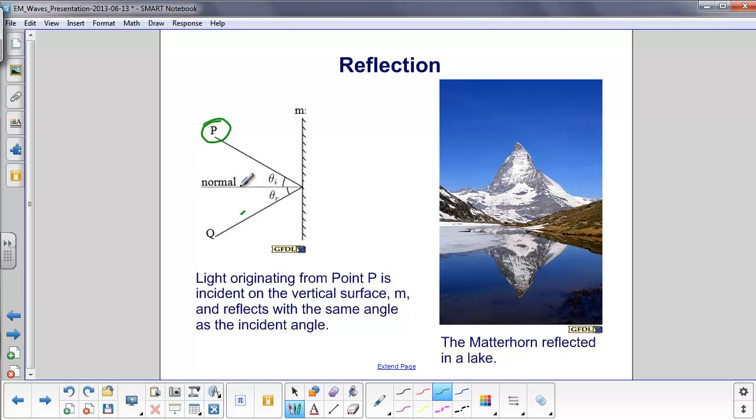Whenever you do optics, you talk about the normal. The normal is a line that is perpendicular to the surface over which you're reflecting off of. Theta initial is the angle of the incident light, or theta incident, and theta r is the reflected light, and they are both measured to the normal. The reflected light angle is exactly equal to the incident light angle.